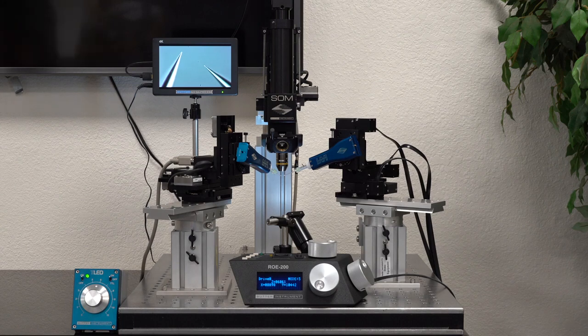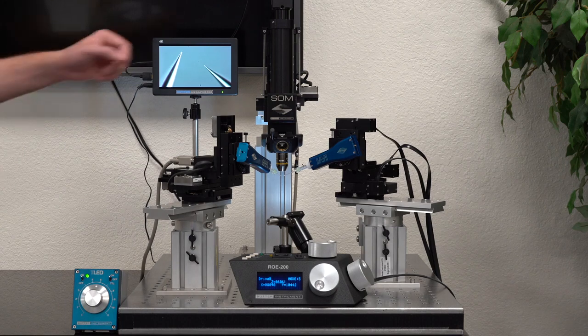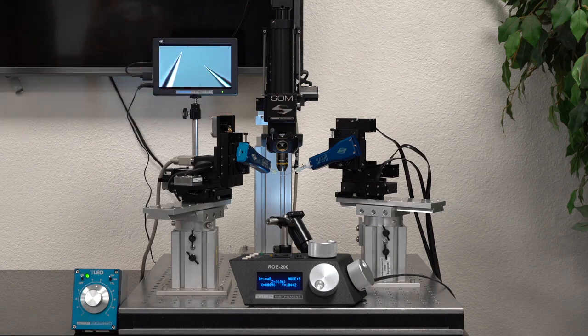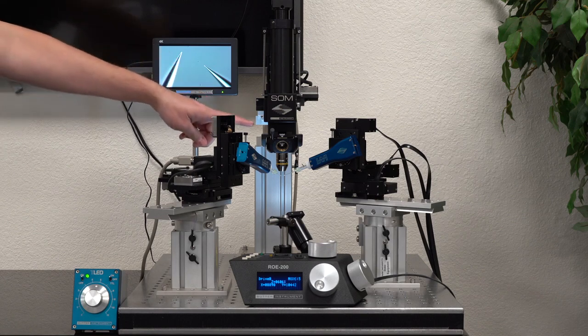The SOM can accommodate two RMS thread objectives on the swing nose piece. A single larger diameter objective can be mounted by removing the swing nose piece and this aluminum block.